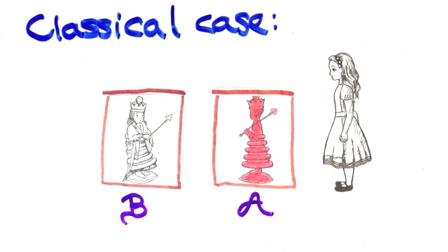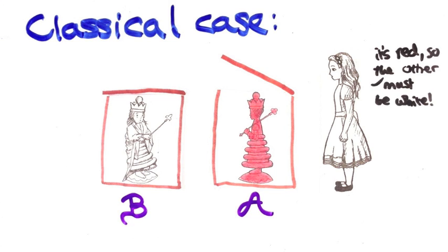In the classical case, measuring one of the particles, say finding out that it's red, doesn't actually turn the other one white. In fact it does nothing to the other one. The objects already had a color all along.